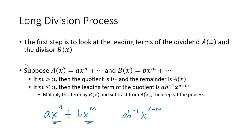Just like in the regular long division process, we multiply a·b⁻¹·xⁿ⁻ᵐ by the divisor b of x, and then subtract. We repeat that process until we get a remainder with degree less than the degree of our divisor, or until we get the zero polynomial.